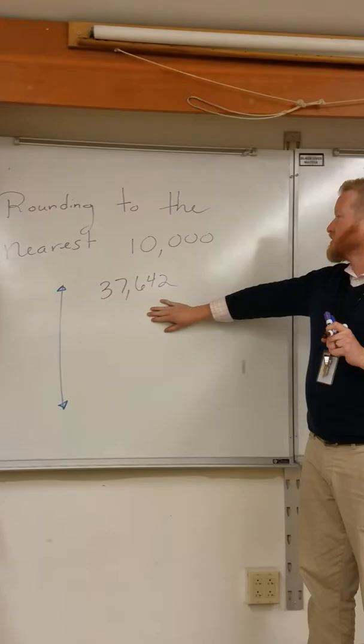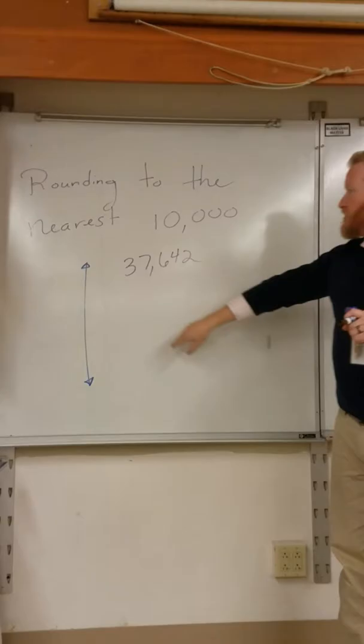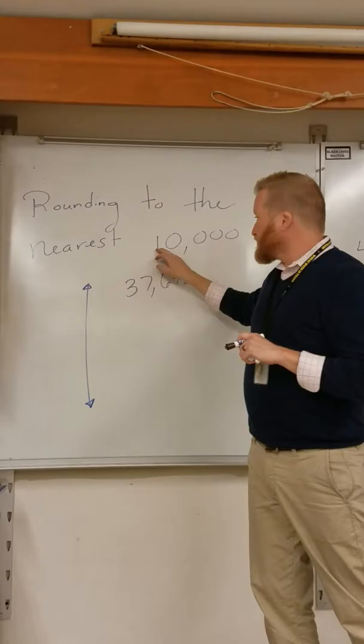As the students get into the larger place values, we notice there is a little bit of a drop off on their ability to do this. So in this case we're rounding to the nearest 10,000. Our number that we're going to try to round is 37,642.